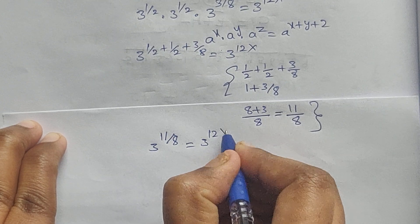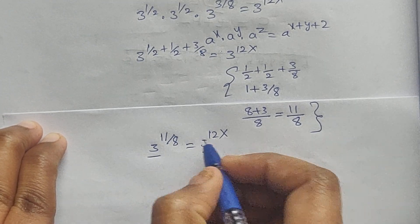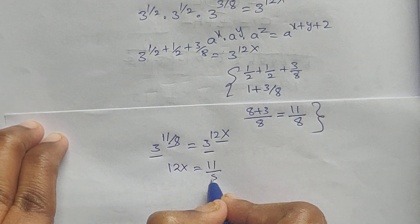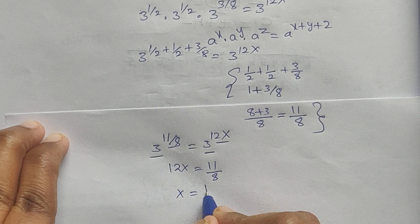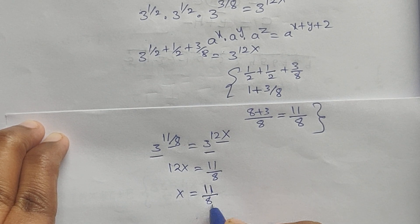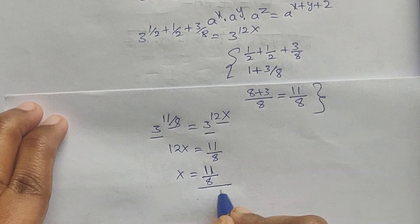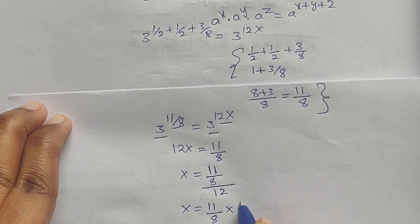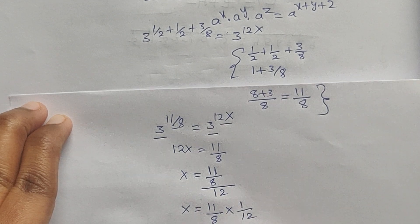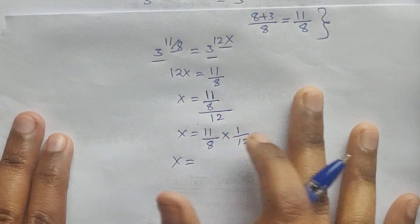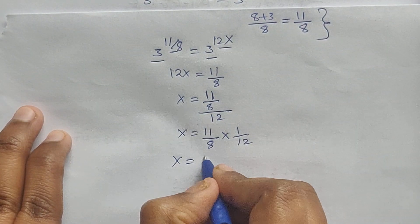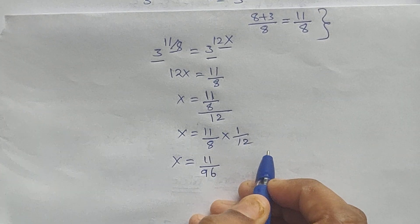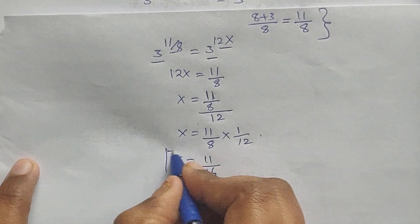Here we have the same bases, so we equate the exponents. Therefore 11/8 equals 12x. Solving for x: x equals 11 times 1 divided by 8 times 12, which is 11 divided by 96. So x equals 11/96. This is the x value.